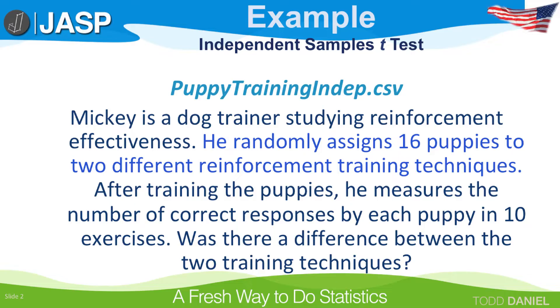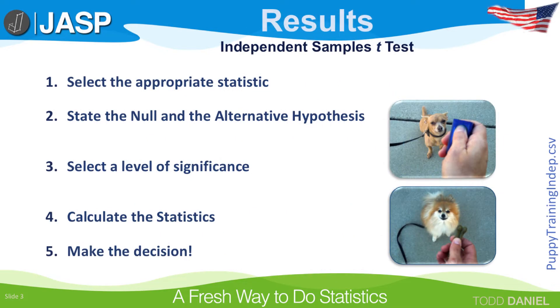Let's walk through the five steps of hypothesis testing. Step one, select the appropriate statistic. We will compare two independent samples. The first sample is the puppies who were trained using the clicker training, and the second sample is the sample who were trained with food reward. To compare these two samples, we will use an independent samples t-test.